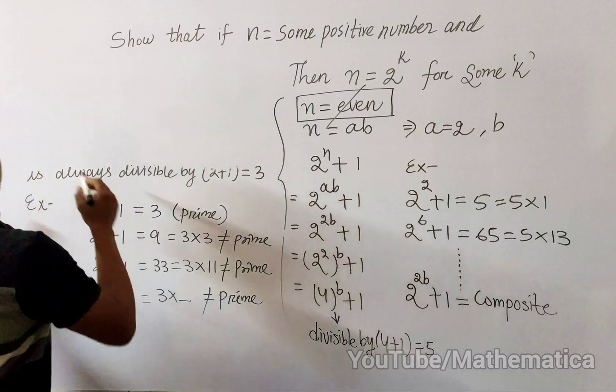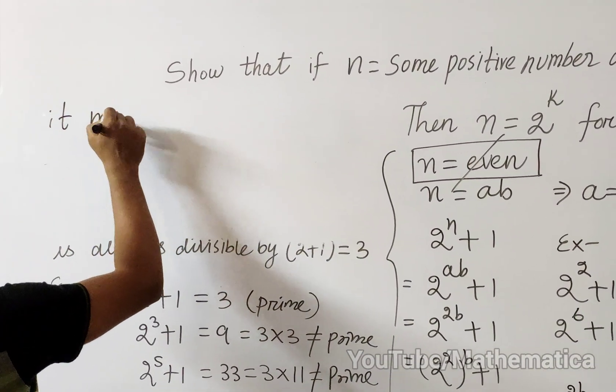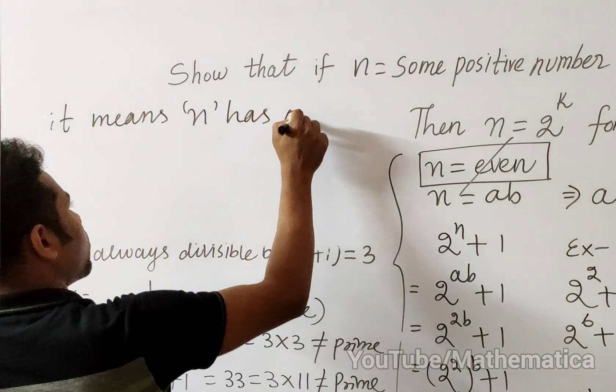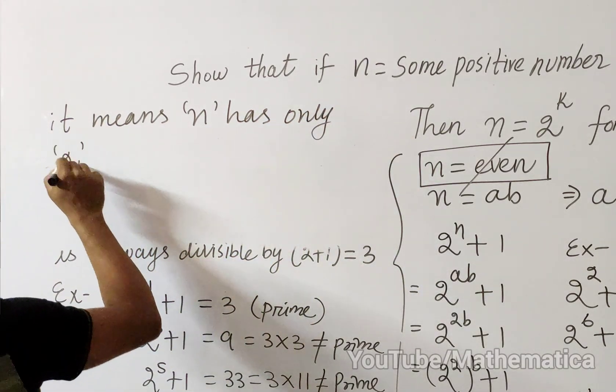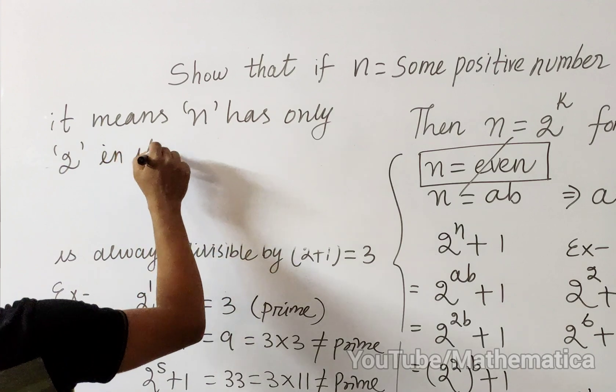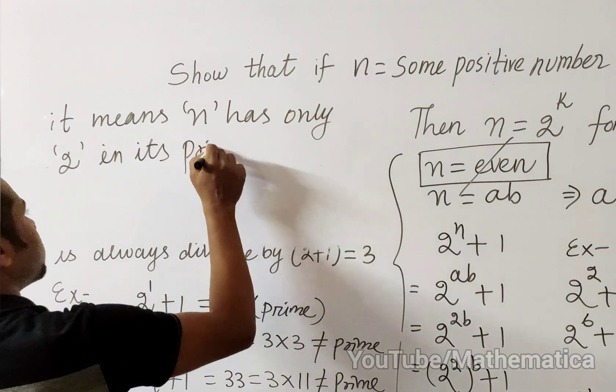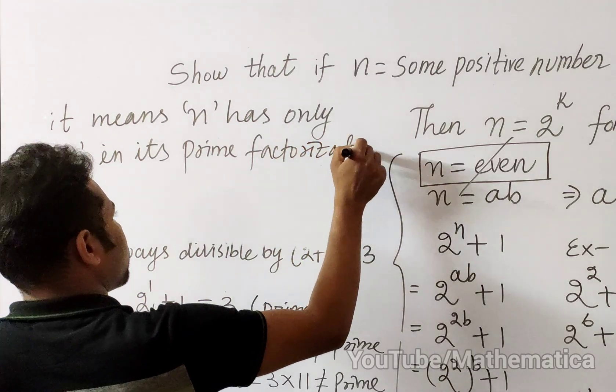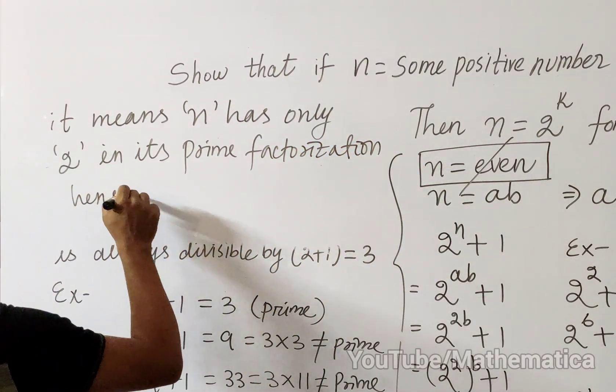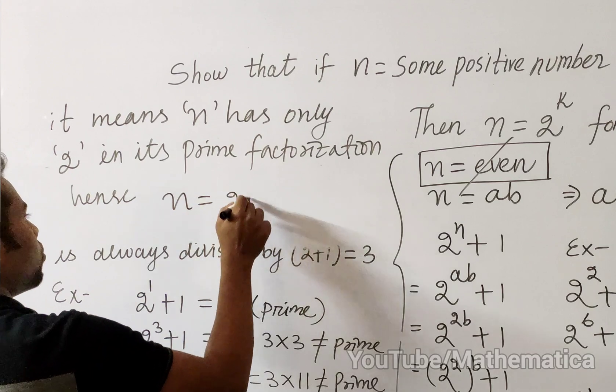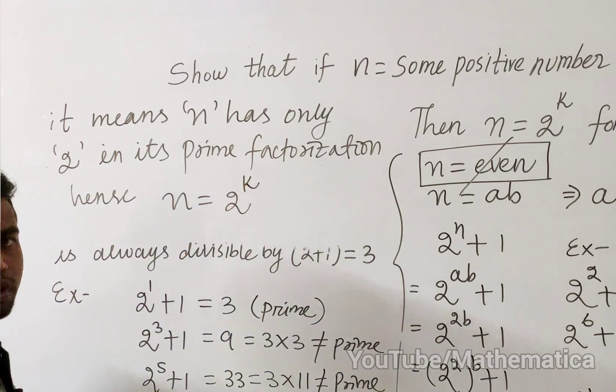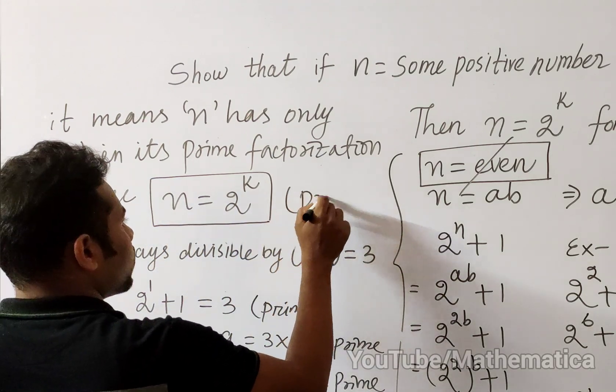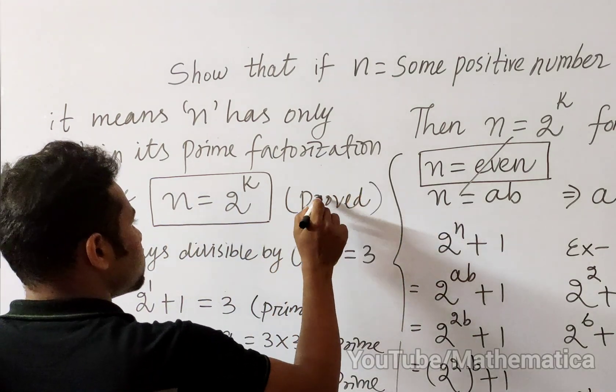It means n has only 2 in its prime factorization, hence n equals 2^k for some k. And here, our proof is over. Hence, this is proved.